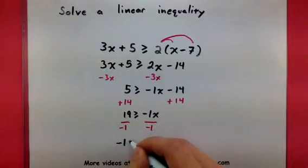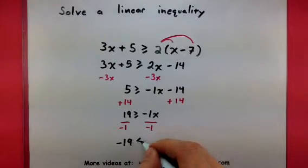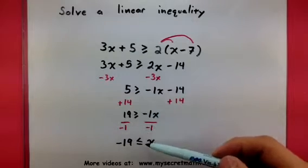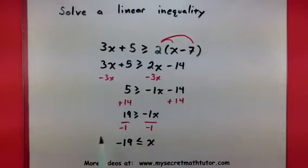So, negative 19 is less than or equal to x. Again note that flipping of the sign. So this is our final answer, that x is any number greater than or equal to negative 19.